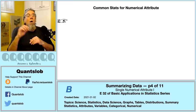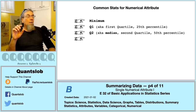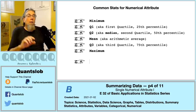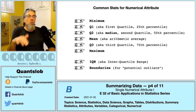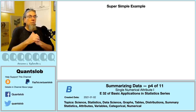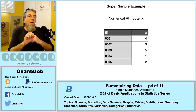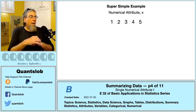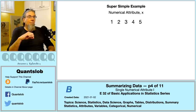Our job for this video is to show the calculation for eight statistics — it may seem like a lot, but it is not. The IQR — interquartile range — is a measure of spread. The boundaries for so-called potential outliers involve the calculation of two values: a lower boundary and an upper boundary. Let's look at a super simple made-up example: a collection of five elements, each with a recorded numerical attribute named x. We sort these values in ascending order and we have the integers one through five.